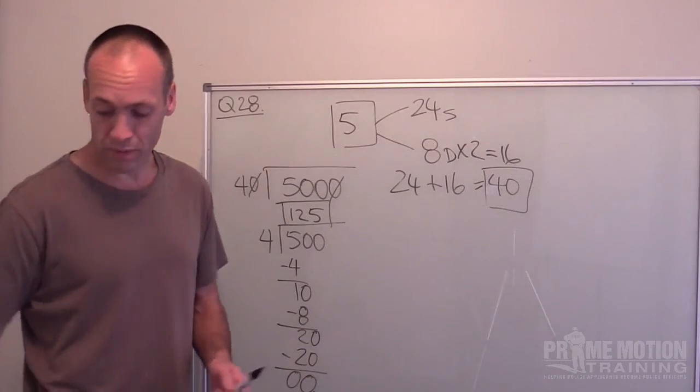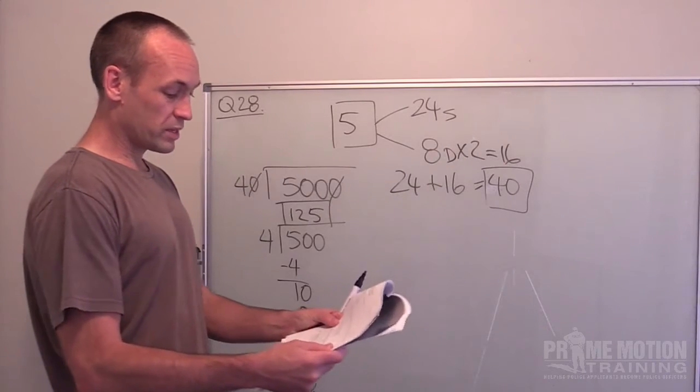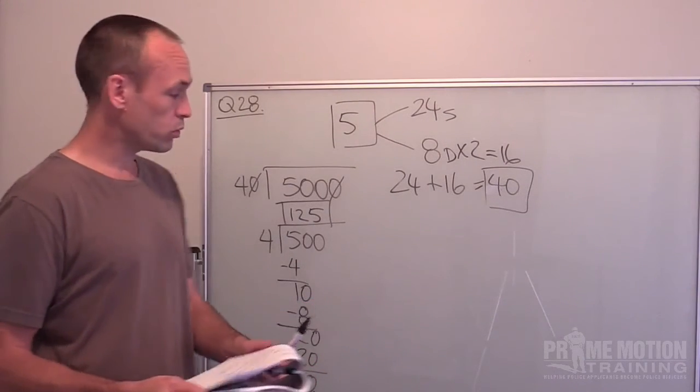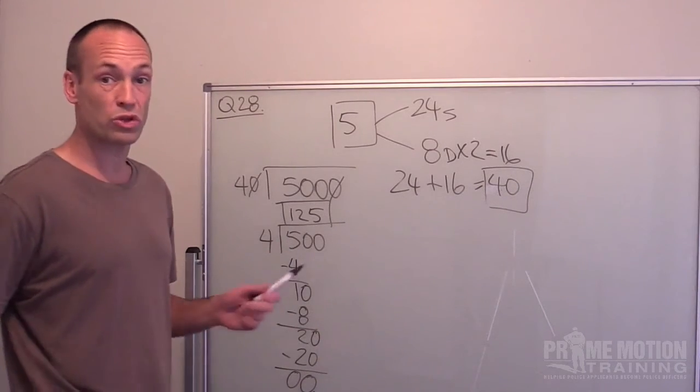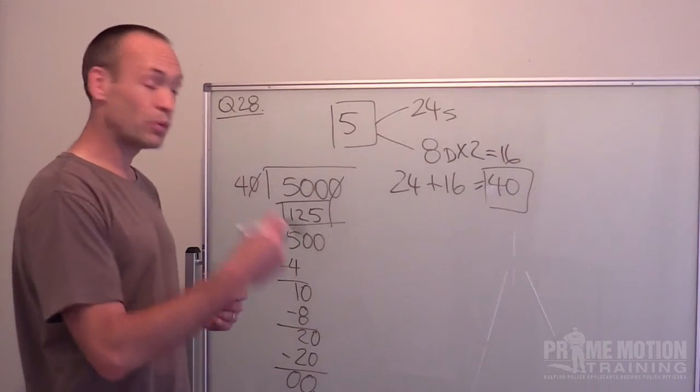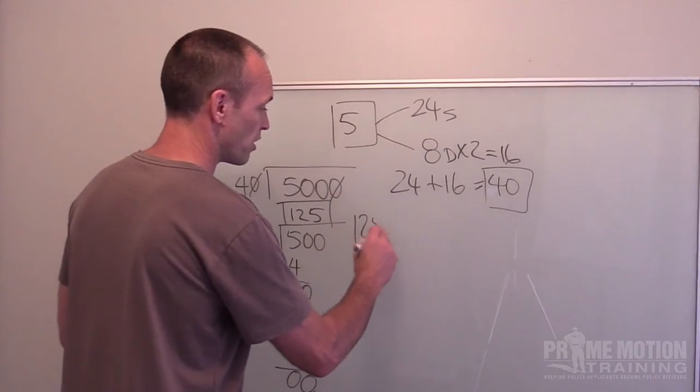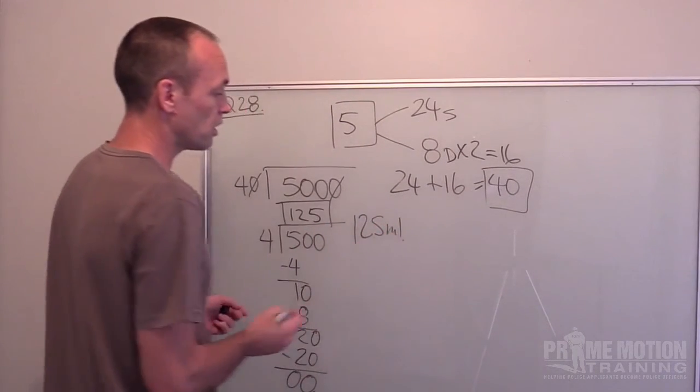So if we go back to the question, what volume of ice cream on average is in one scoop? It would be 125. But important to keep in mind what measurement we're talking about. 125 millilitres of ice cream.